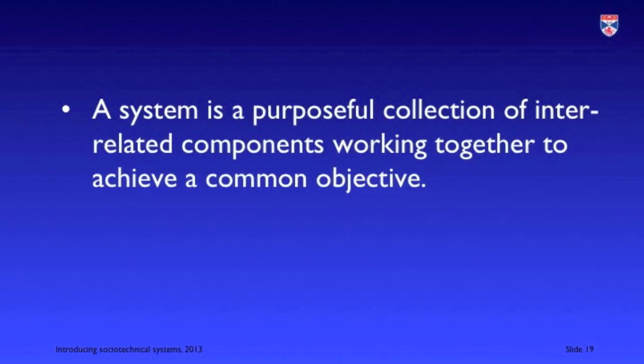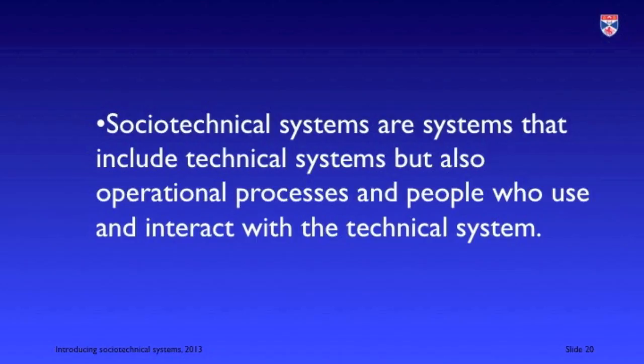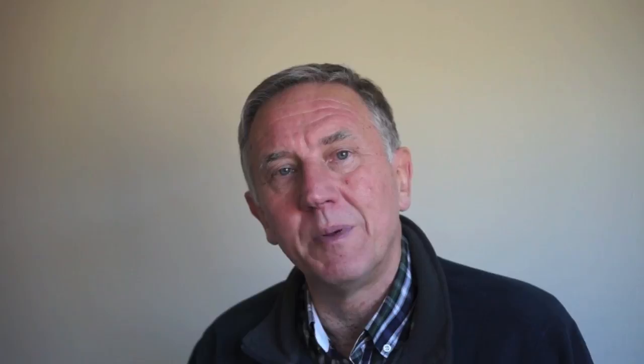In summary, a system is a purposeful collection of interrelated components that work together to achieve a common objective. Socio-technical systems include technical systems but also people and business processes that collaborate and interact with each other, geared to supporting some broader business goal. To achieve dependability, we need to contain failures within technical systems and avoid them spreading into the broader socio-technical system, because that is where the adverse societal effects occur.